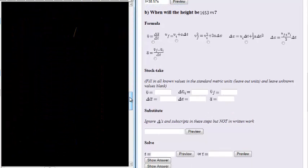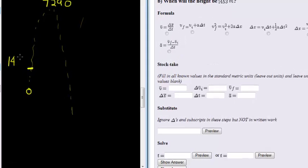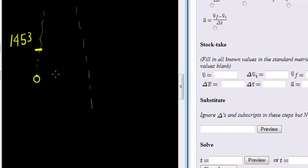Here we have an object that is thrown up in the air. And at some point, we know the maximum height in the previous question, we calculated it as 7290 meters. So at some point along the way, its height is 1453 meters.